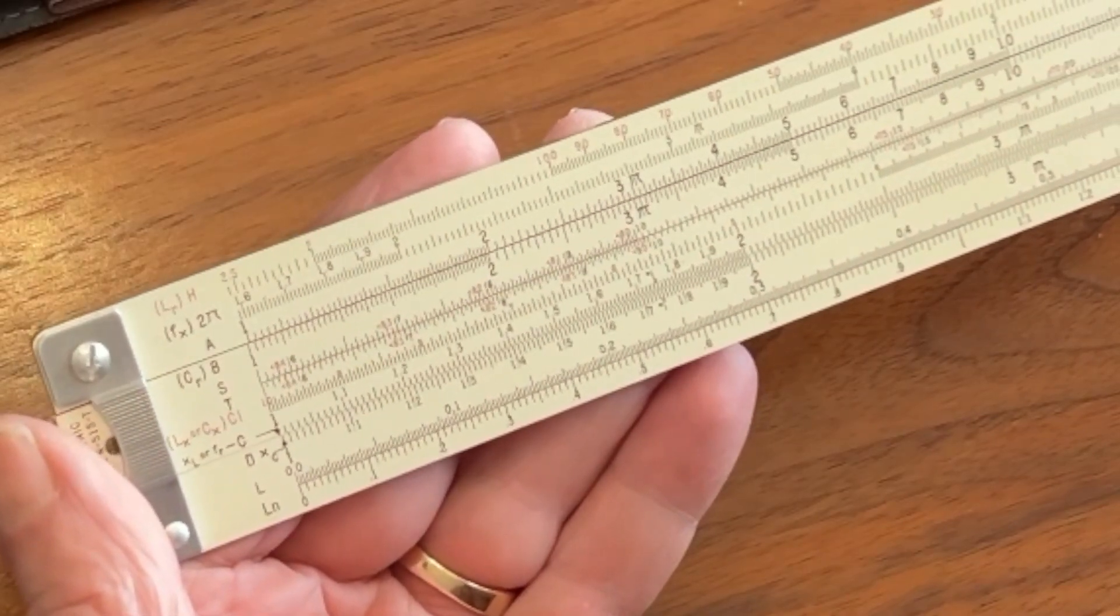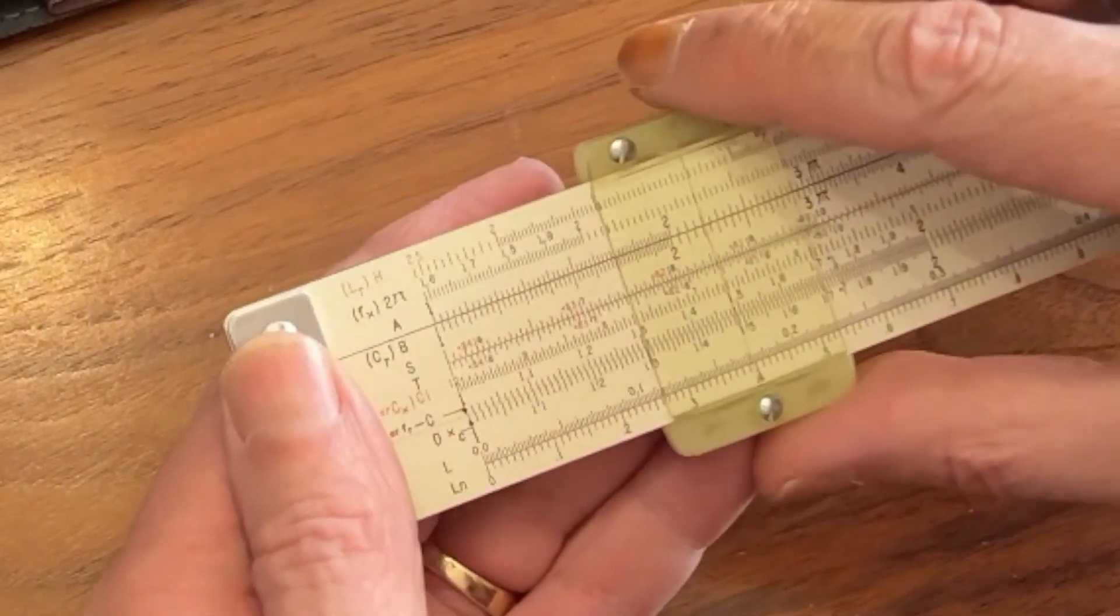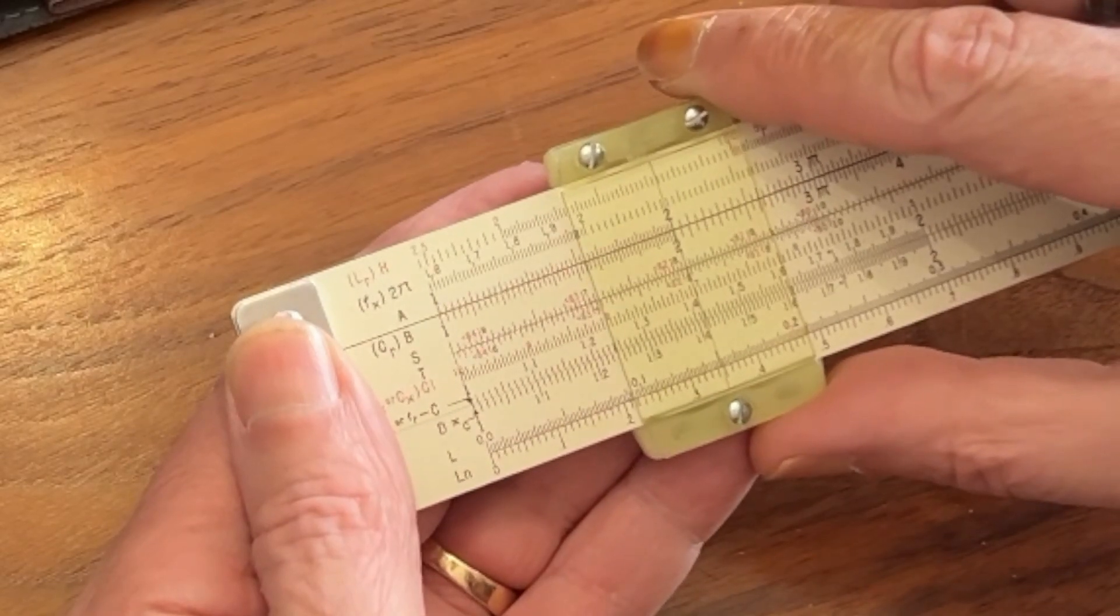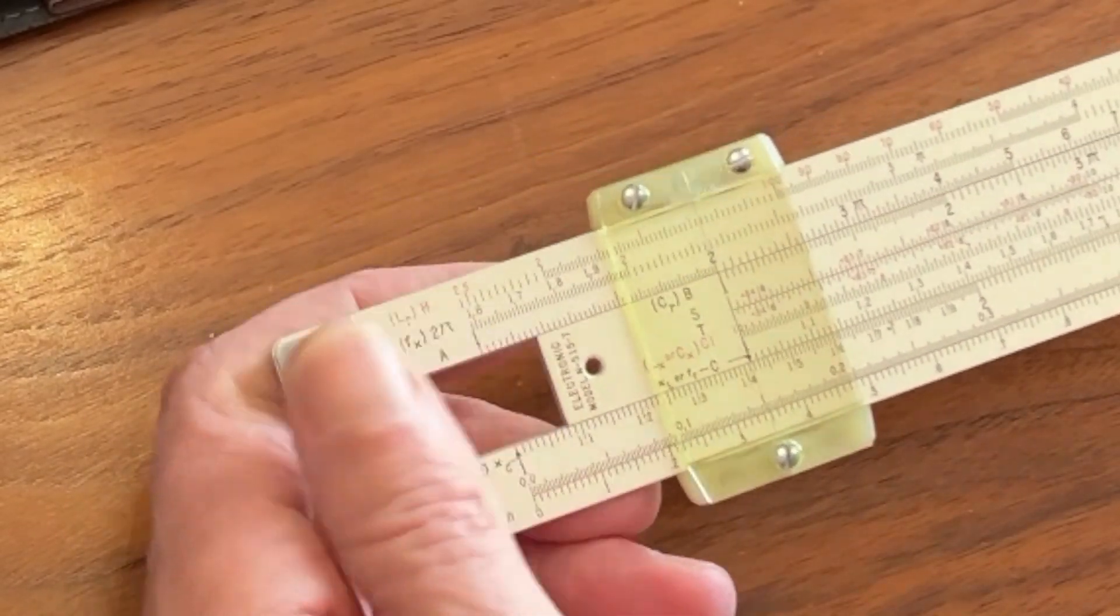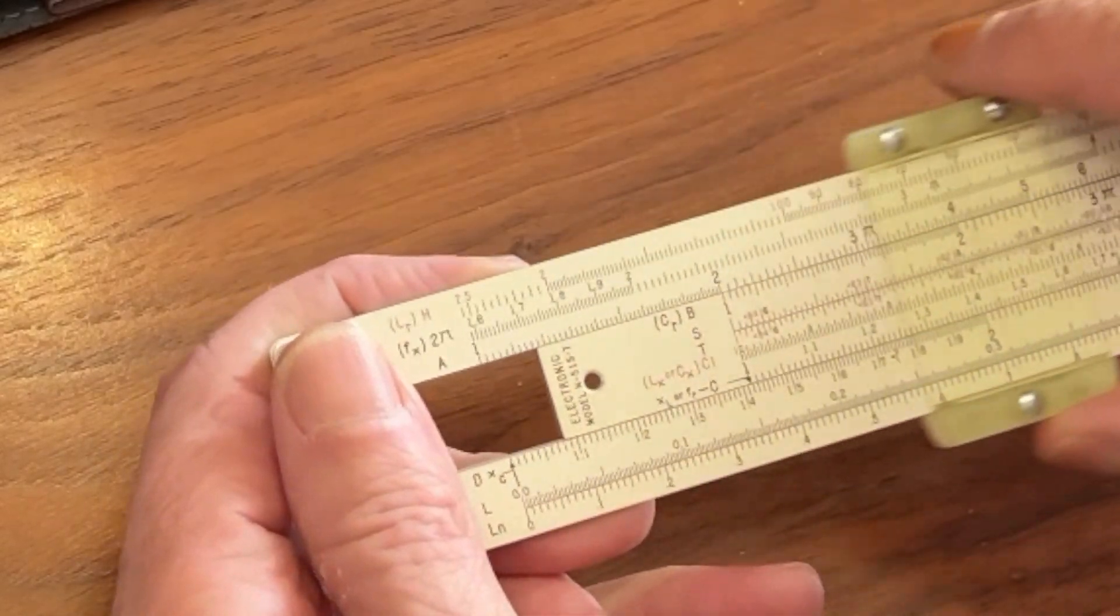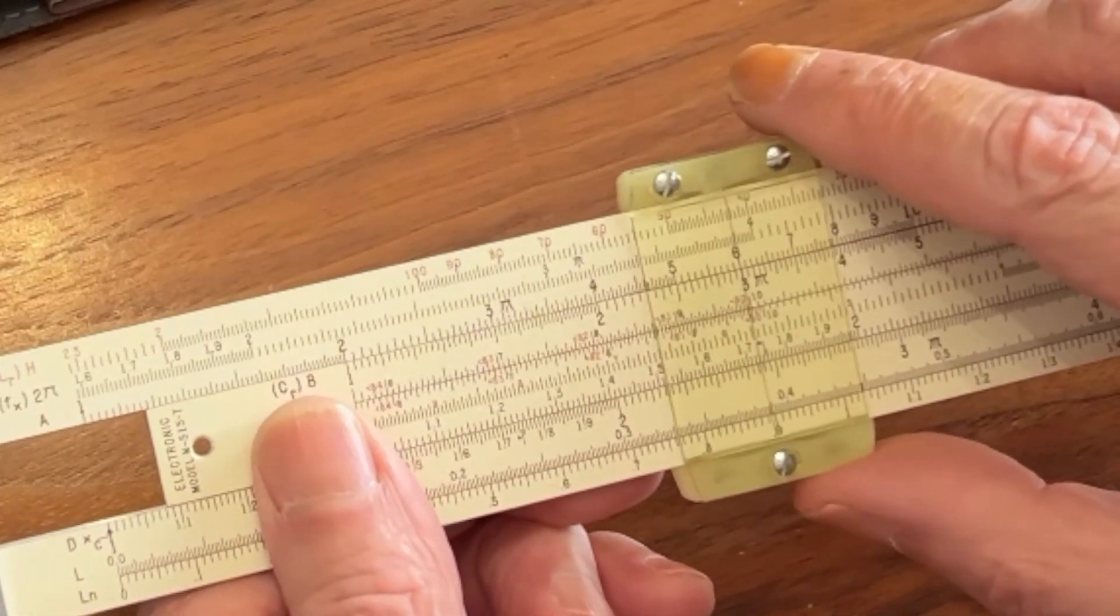Let's look up here at the A and B scale. Now, once again, if you bring your cursor to 2, put the index under it, and come out to 3, once again, you get your answer, 6.